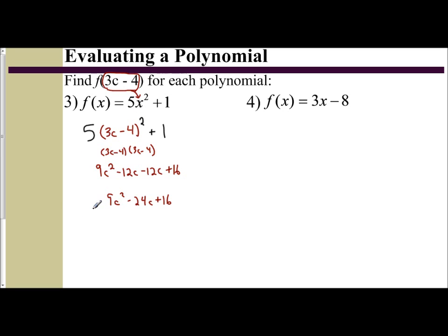I still have the 5 on the outside and then the plus 1. Now I'm going to distribute and get 45c squared minus 120c plus 80 plus 1. Combine your like terms and you get 45c squared minus 120c plus 81.